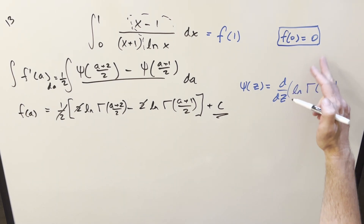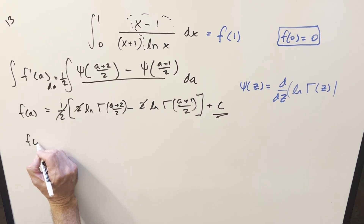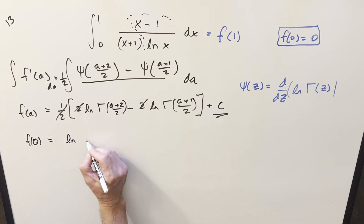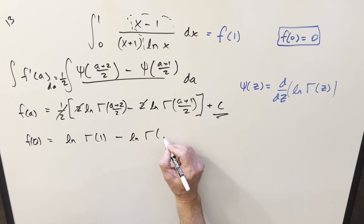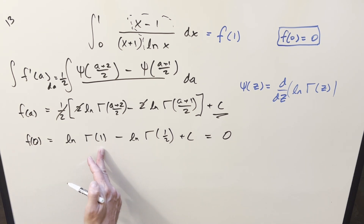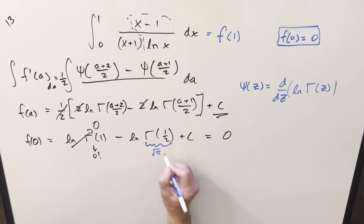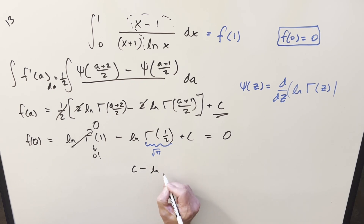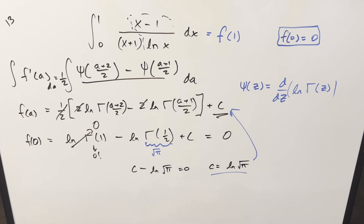We don't want the plus c, and that's exactly why we noted f(0) = 0 at the beginning. Plugging a = 0: the first term becomes ln(gamma(1)), and gamma(1) = 0! = 1, so ln(1) = 0. The second term becomes ln(gamma(1/2)), and we know gamma(1/2) = sqrt(pi). Setting everything equal to 0, we get c minus ln(sqrt(pi)) = 0, so c = ln(sqrt(pi)).